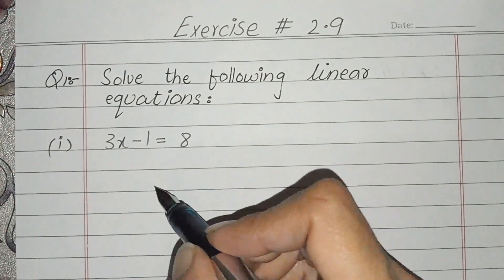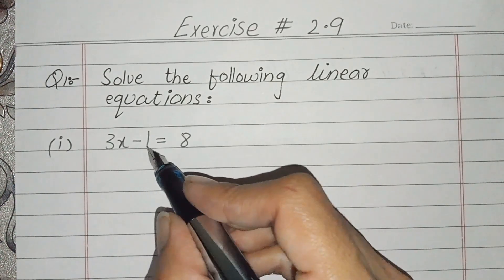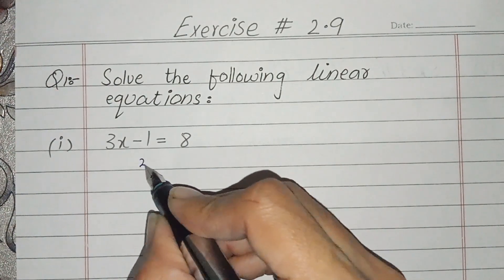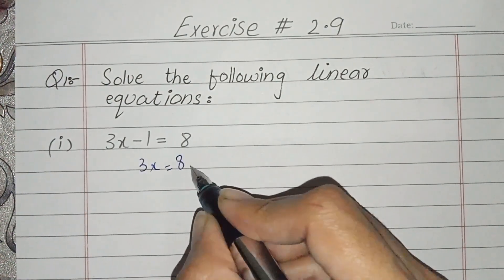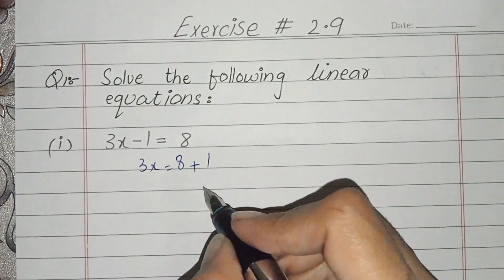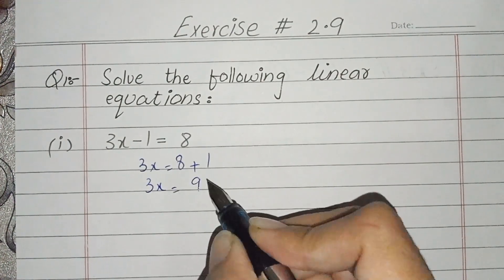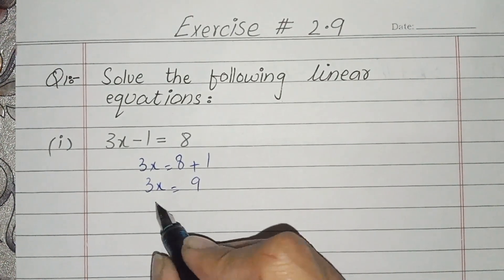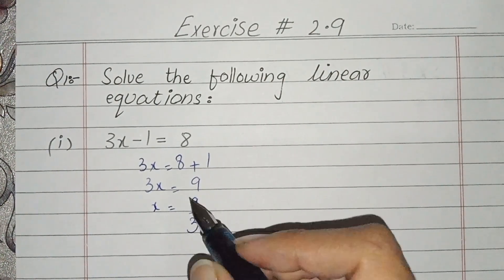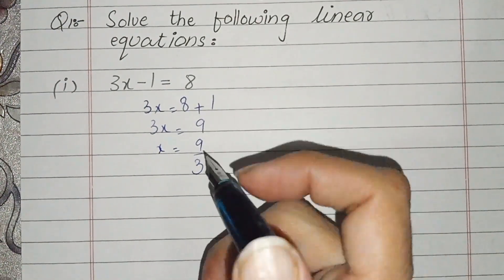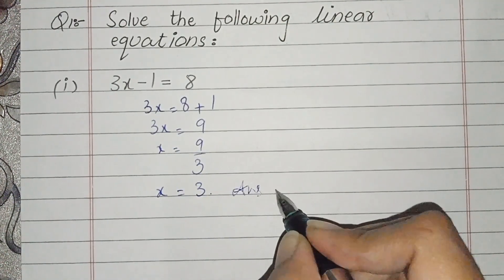The like terms are the same. We will change the position of the like terms. When we go to this direction, this is plus 1. And this is plus 1. And this is 3x is equal to 9. Now, 3x is equal to — we will divide. Either multiply or divide. Divide. And we get 3.